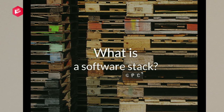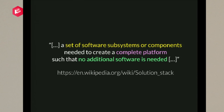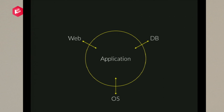If you want to define anything these days, everyone trips off to Wikipedia. The Wikipedia definition for a software stack is: a set of subsystems that work together to build a complete platform so that we don't need anything more to build an application. From an architect's point of view, you decide what you need, build a diagram, choose those components — and they might change over time, it's an evolving concept.